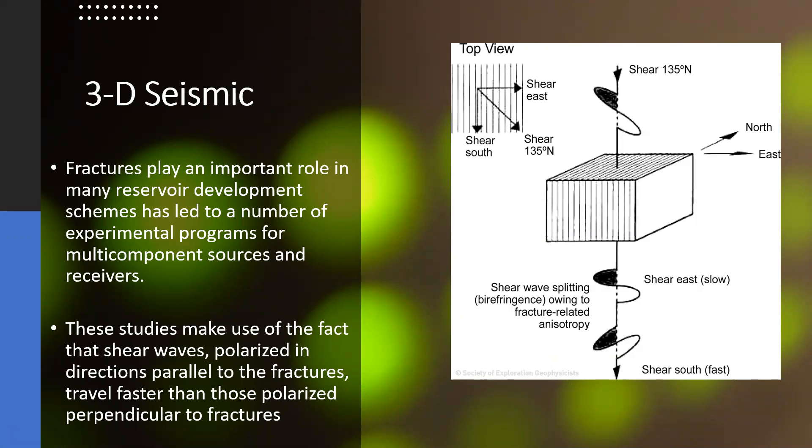We know the shear wave travels faster when it travels parallel to the fractures. So that's why shear wave behavior can be used to identify the fractures that play an important role in many reservoir development schemes. It means if we are also conducting or recording S wave along with P wave, it provides some extra information that sometime P wave fails to provide us.